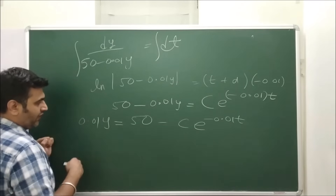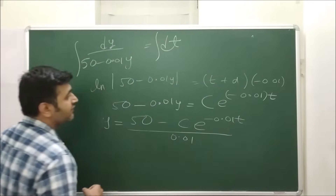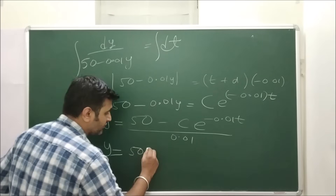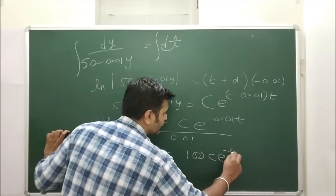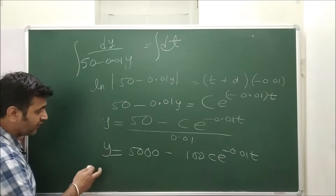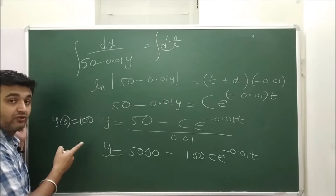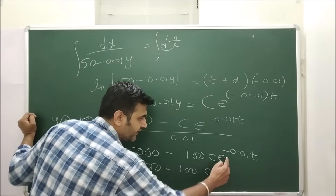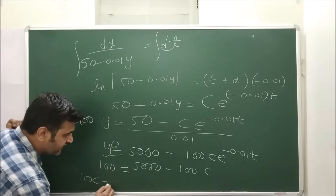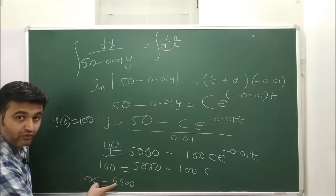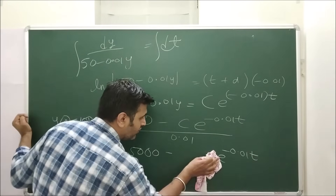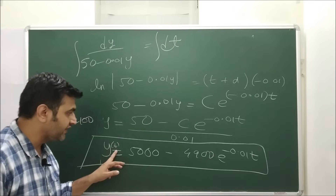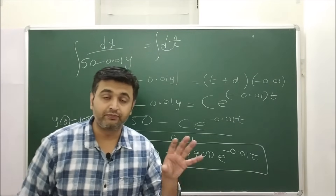Applying the initial condition y(0) = 100: 100 = 5000 − 100c·e^0, which gives 100c = 4900. Substituting back, the solution is y(t) = 5000 − 4900·e^(−0.01t). Now for any given time t, you simply substitute to find the amount of salt in the tank. At t = 0 you get 100 pounds, and as t increases the salt amount grows.